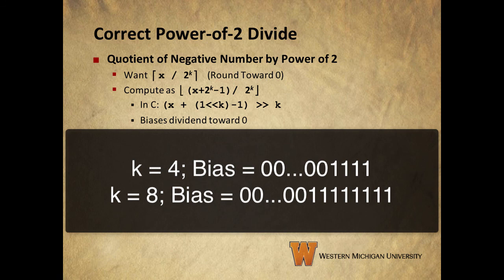So, if we shift by 4, we end up adding a bias of 15, or 1111. If we shift by 8, we add a bias of 255, 8 bits of all ones.